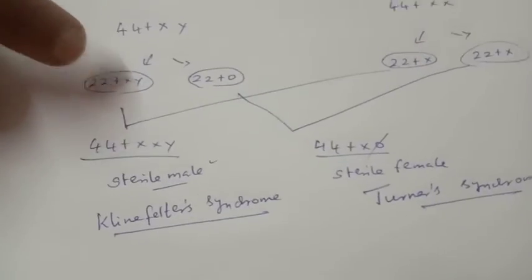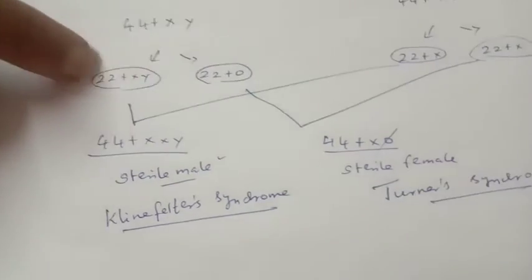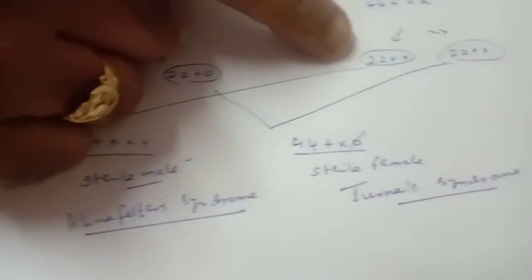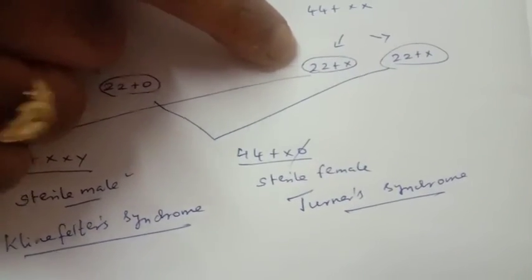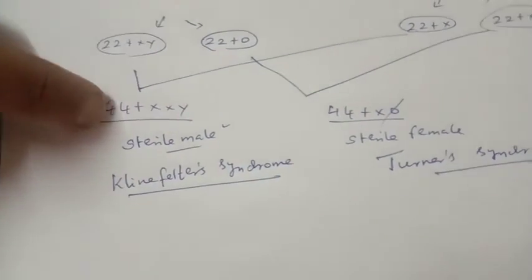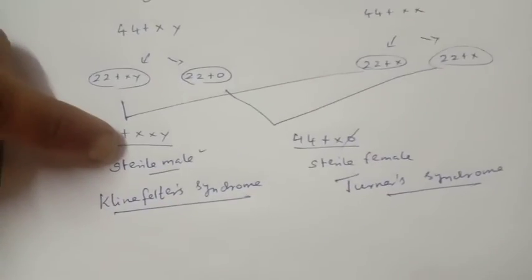A male gamete or spermatozoa with 24 chromosomes fertilizes an egg with 23, leading to the formation of Klinefelter syndrome, the sterile male transgender.